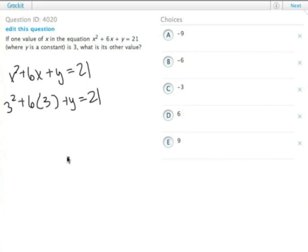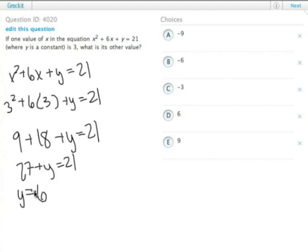So then we have 9 + 18 + y = 21. That's the same thing as 27 + y = 21. So y equals negative 6. Note that that's trap answer choice B in there. We're not trying to solve for y, we're trying to solve for the other value of x.